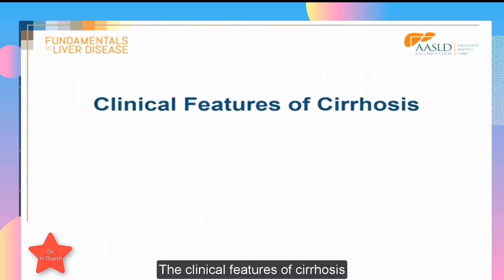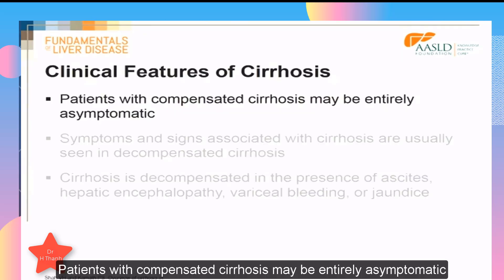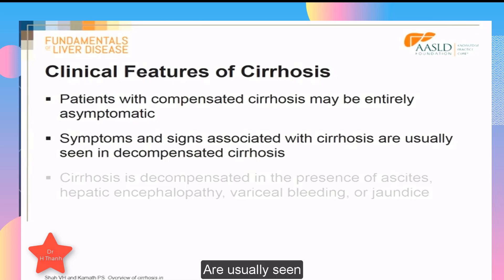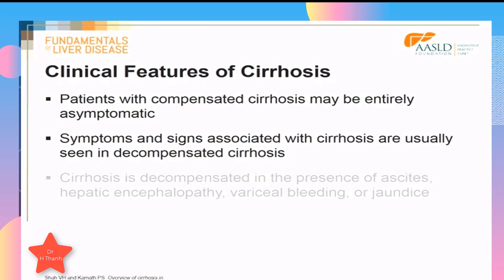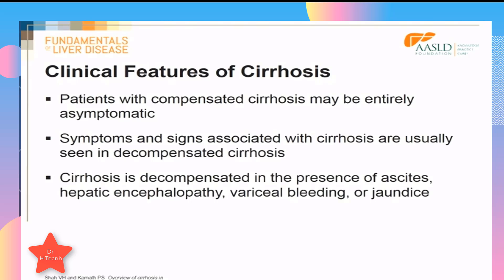The clinical features of cirrhosis are predominantly seen in patients with decompensated cirrhosis. Patients with compensated cirrhosis may be entirely asymptomatic. The symptoms and signs we commonly associate with cirrhosis are usually seen only in decompensated cirrhosis. Cirrhosis is decompensated in the presence of ascites, hepatic encephalopathy, variceal bleeding, or jaundice.